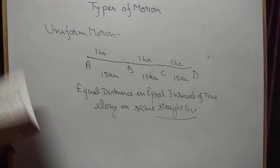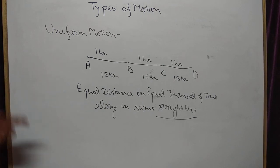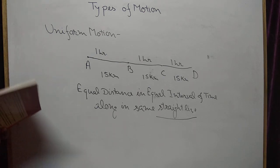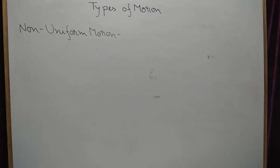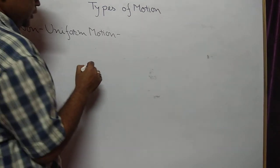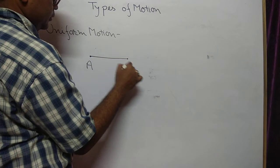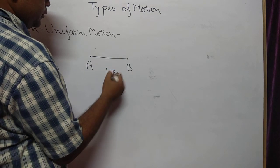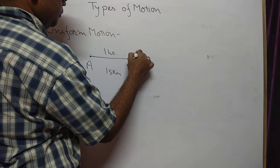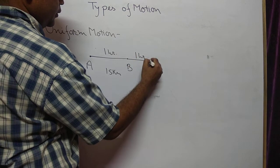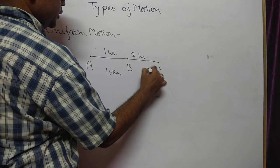Non-uniform motion is just the opposite of uniform motion in every respect. Suppose the same body moves from A to B — distance 15 km — in 1 hour. Then it takes 2 hours to reach B to C, with the distance also being 15 km. The distance is equal but the time is not equal.